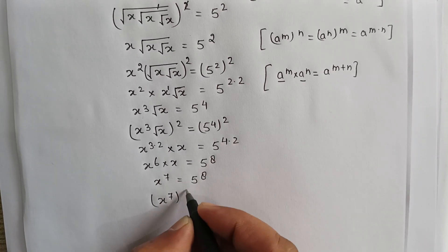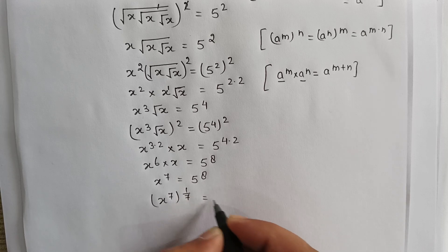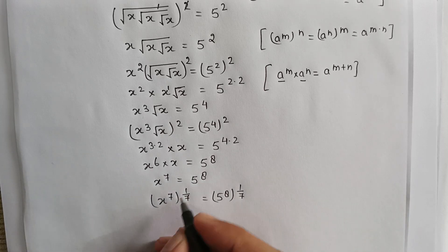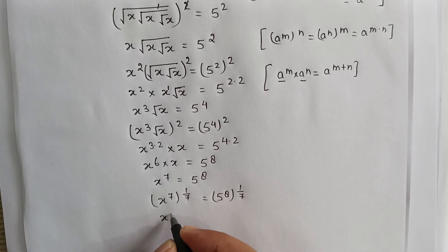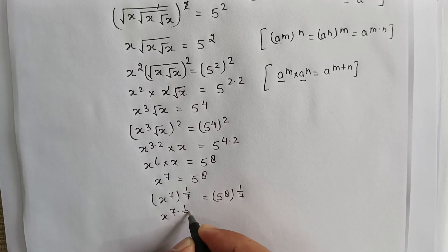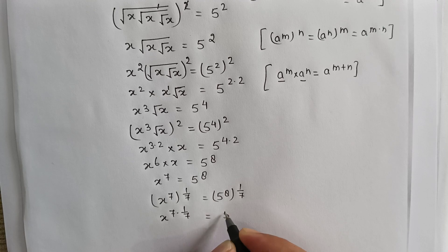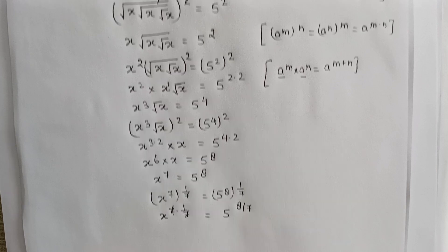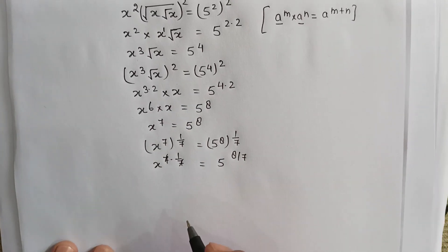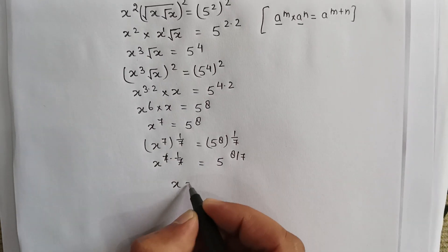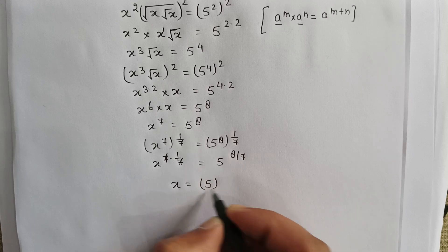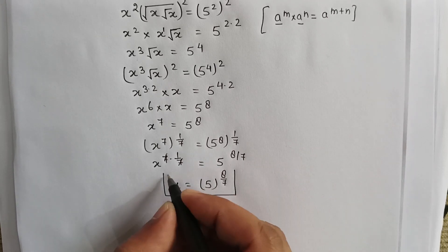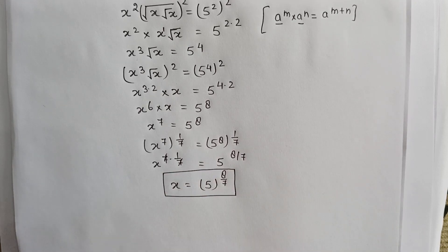So x^7 = 5^8. Raising both sides to the power 1/7: (x^7)^(1/7) = (5^8)^(1/7). This gives x^(7 × 1/7) = 5^(8/7), so x = 5^(8/7). This is our answer. Thank you friends.